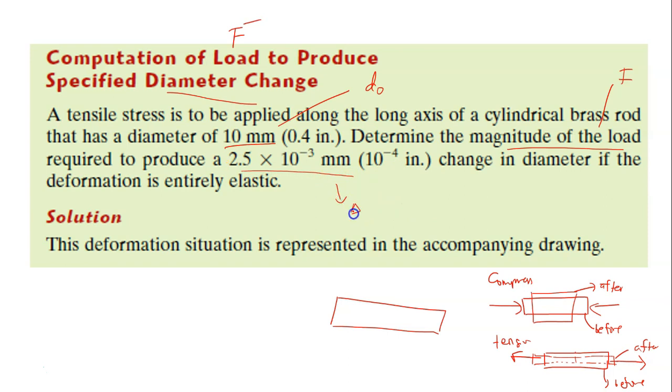This is delta D, the change in diameter, if the deformation is entirely elastic. The material experiences a delta D of 2.5 × 10⁻³, but it doesn't say whether the final diameter decreased or increased. However, the key point here is tensile stress.